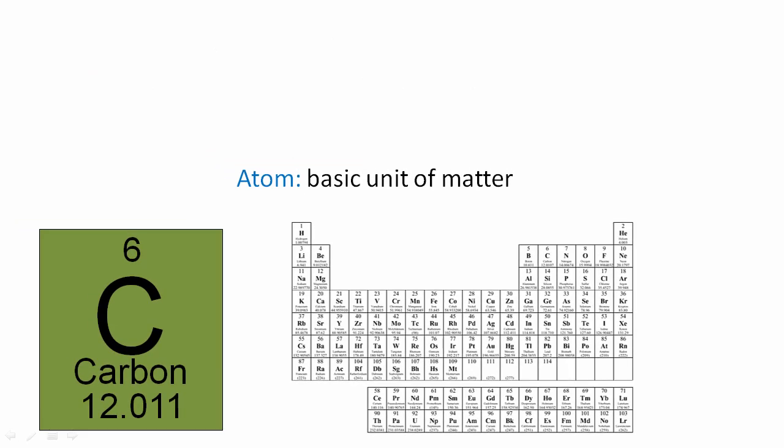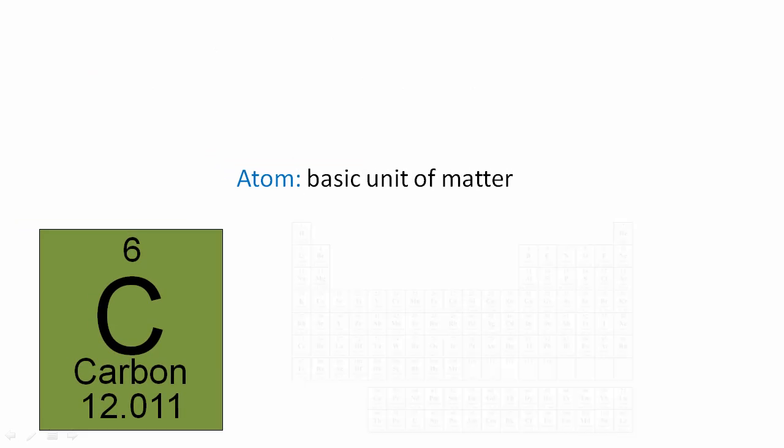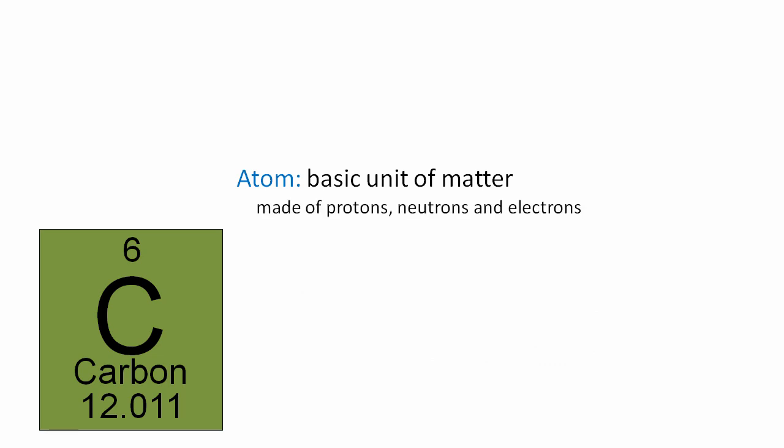Here we have carbon as it would be seen on the periodic table. Carbon is an example of an atom, and it's made up of protons, neutrons, and electrons.